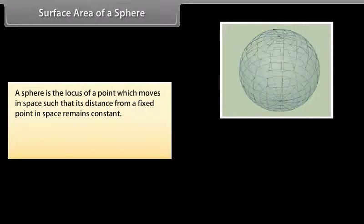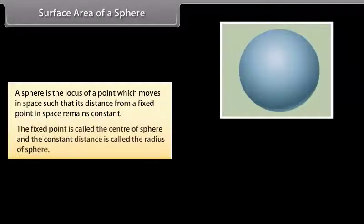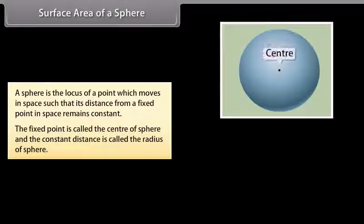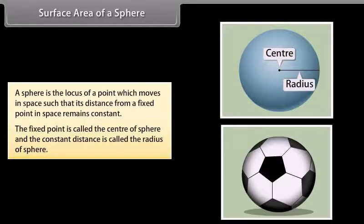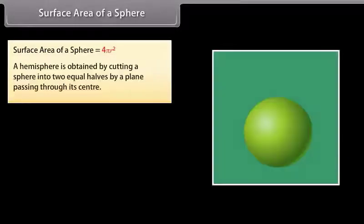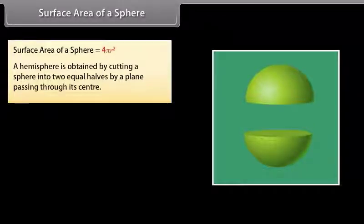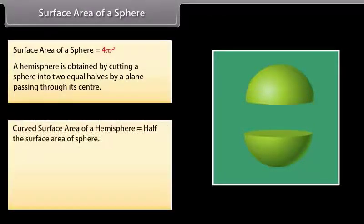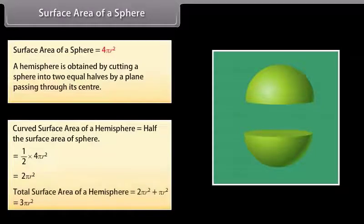Surface area of a sphere. A sphere is the locus of a point which moves in space such that its distance from a fixed point remains constant. The fixed point is the center and the constant distance is the radius. Surface area of a sphere = 4πr². A hemisphere is obtained by cutting a sphere into two equal halves. Curved surface area of a hemisphere = 2πr². Total surface area of a hemisphere = 3πr².